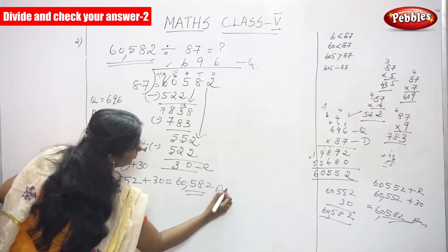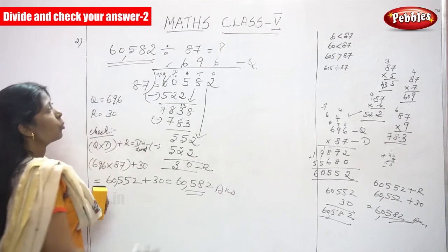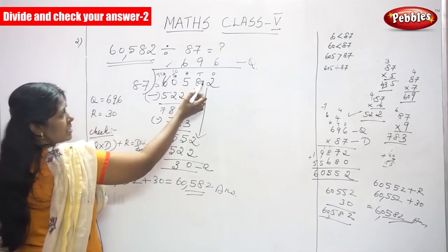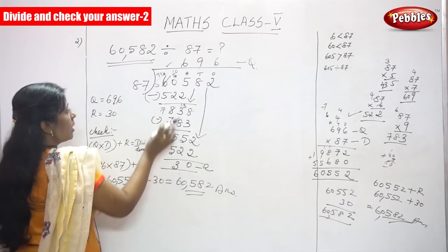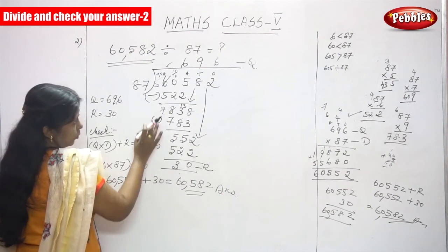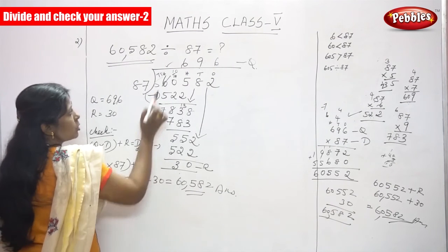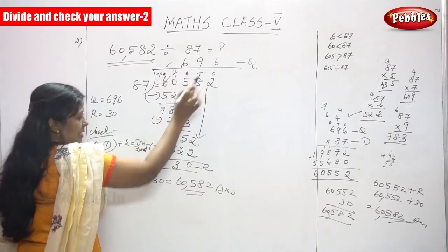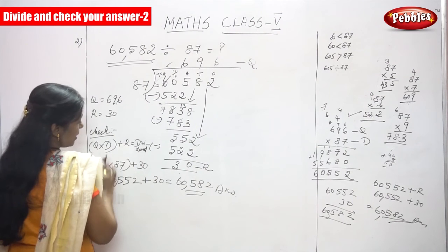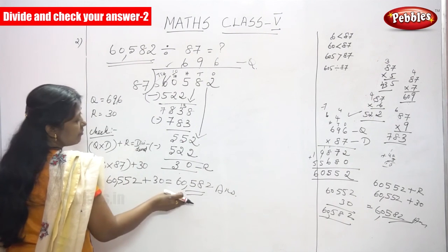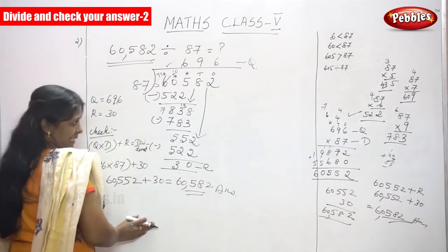This is the perfect answer for this sum. Whatever you find out, the quotient as well as the remainder, both are correct. Quotient is correct, remainder is correct, and the final check method confirms the dividend is also correct. So your sum is correct.